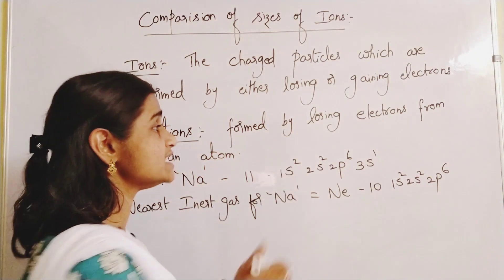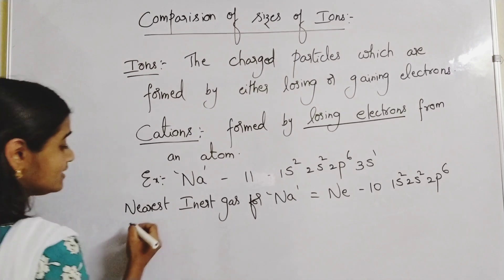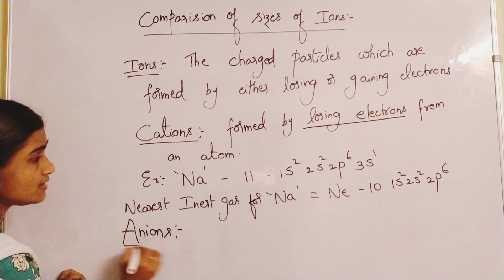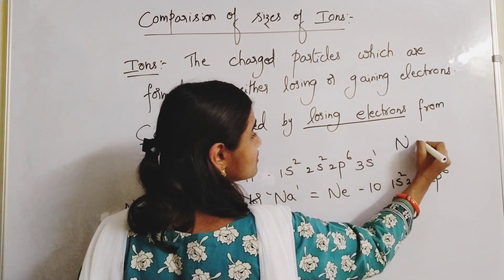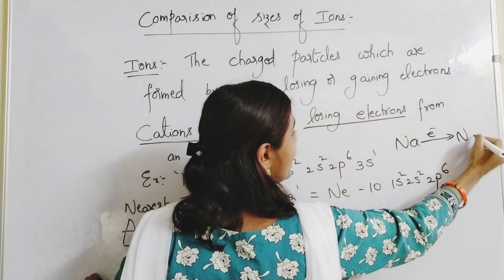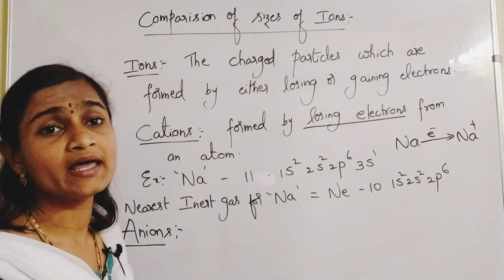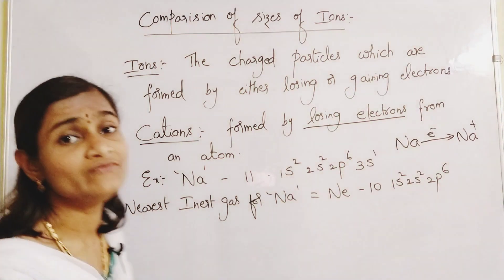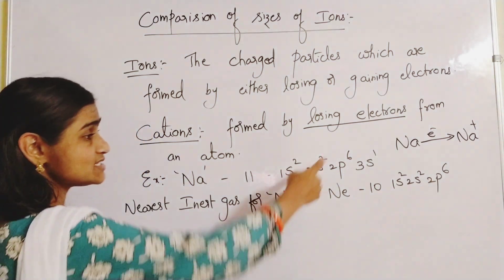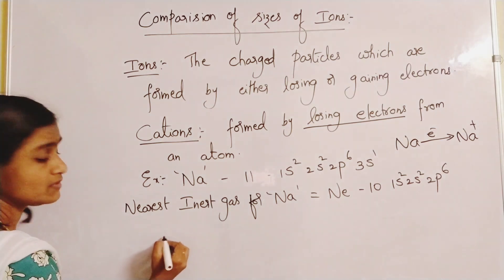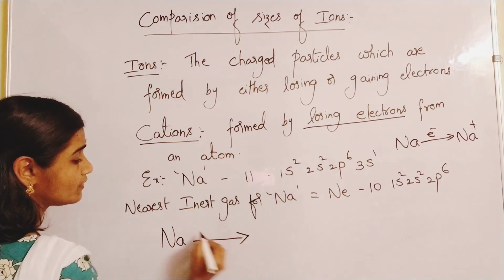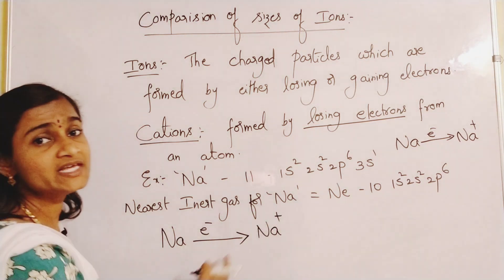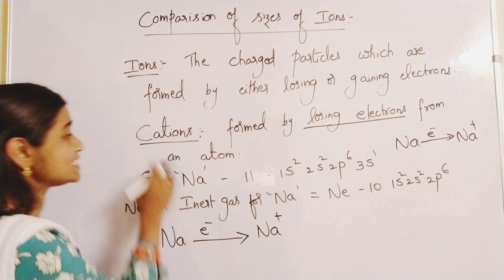Cations are formed by losing electrons. Now the second type of ions are anions. Sodium loses one electron and forms Na⁺. Let us also look at magnesium. Magnesium has atomic number 12, and its nearest inert gas is neon. To become stable like neon, magnesium has to lose two electrons, forming Mg²⁺ ion.